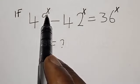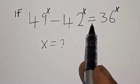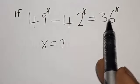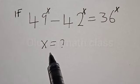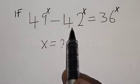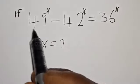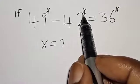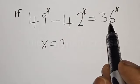If 49 raised to power s minus 42 raised to power s is equal to 36 raised to power s, what is the value of s? Hi everyone, welcome to my class. In today's class we want to find the value of s from this given exponential equation: 49 raised to power s minus 42 raised to power s is equal to 36 raised to power s.